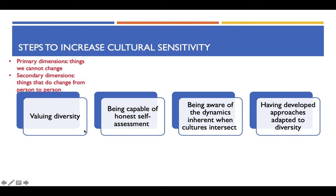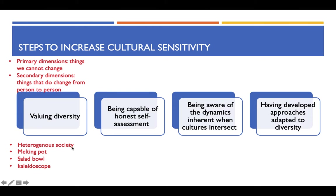We need to first understand the two dimensions of diversity — primary dimensions and secondary dimensions. We also need to understand that many countries are a heterogeneous society. A heterogeneous society means a society where there are people from different cultures and people of different races. America would be one good example of a heterogeneous society.